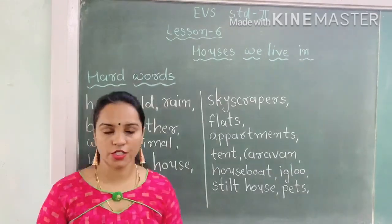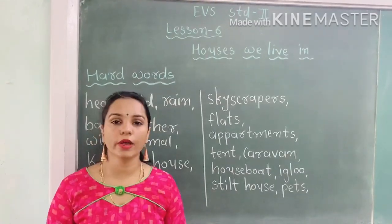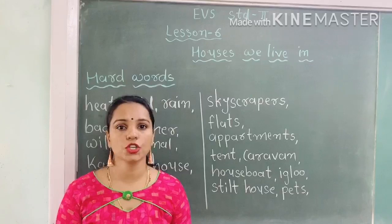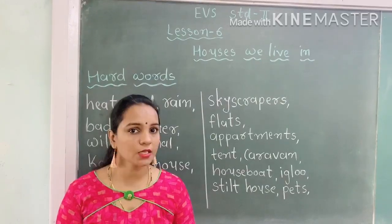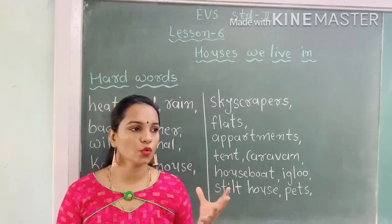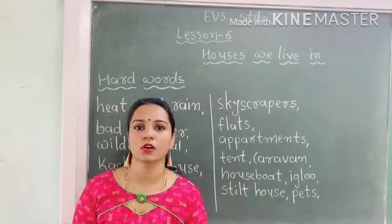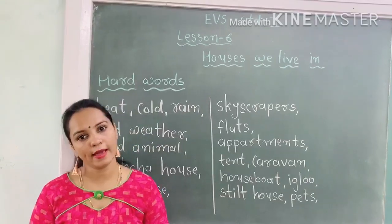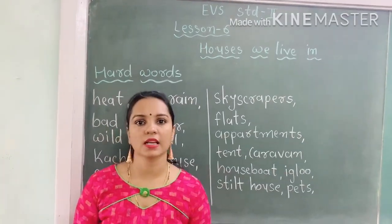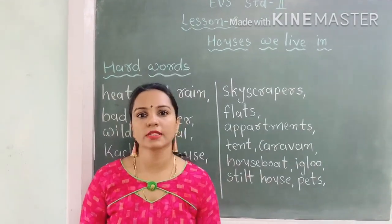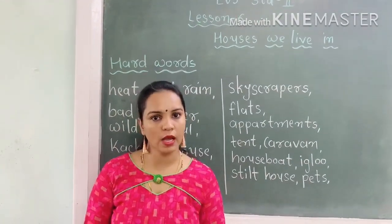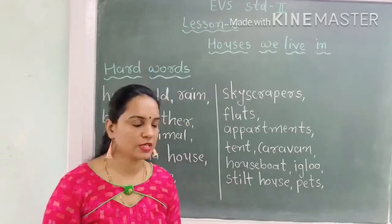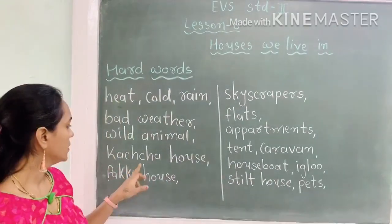कच्चा house जो है वो mostly mud — mud यानी मिट्टी — sticks यानी जो plants या trees की branches होती हैं, उससे बनता है. उसमें dry grass और dry leaves का भी use होता है. उसके बारे में detail में हम लोग lesson में समझेंगे.